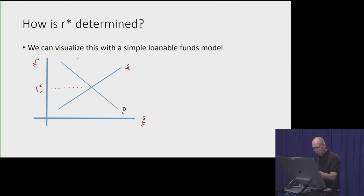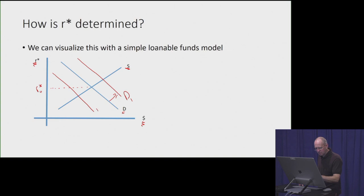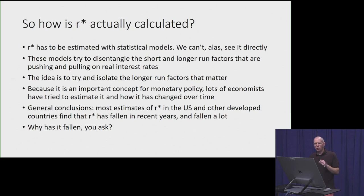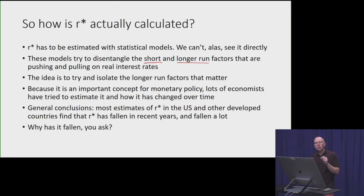Various factors can shift supply or demand for loanable funds and therefore affect r-star. If some factor increases demand for loanable funds — i.e., increases demand for borrowing — that would push up r-star. Other factors could push demand down, which other things equal would tend to reduce r-star. The problem with r-star is that we can't observe it directly; we have to estimate it with statistical models. These models try to differentiate between short-term and long-term factors pushing and pulling on real interest rates, filtering out short-run factors to isolate the long-run ones.